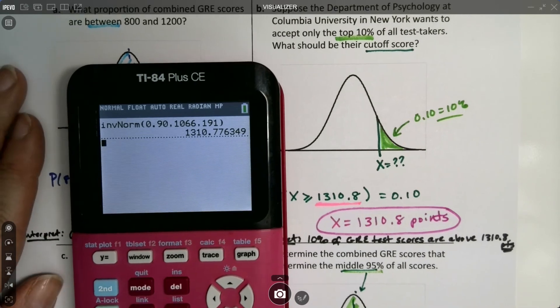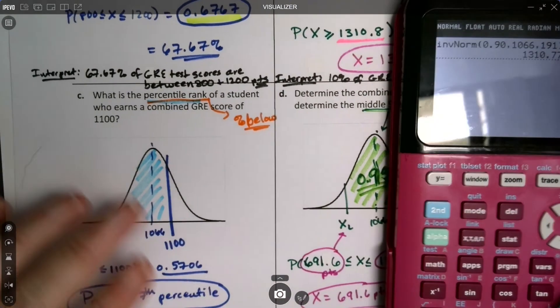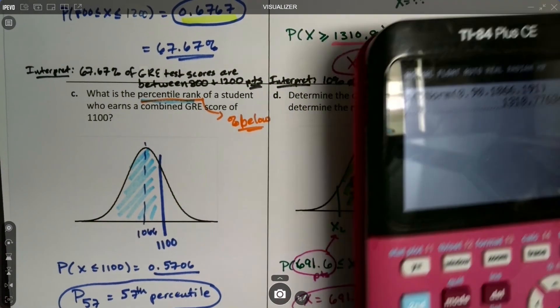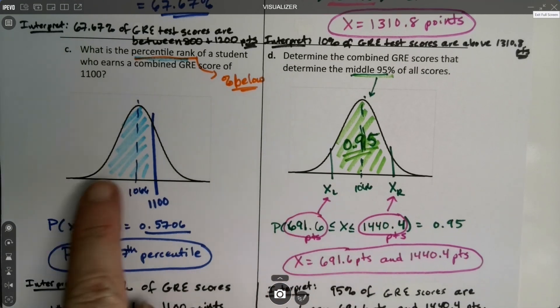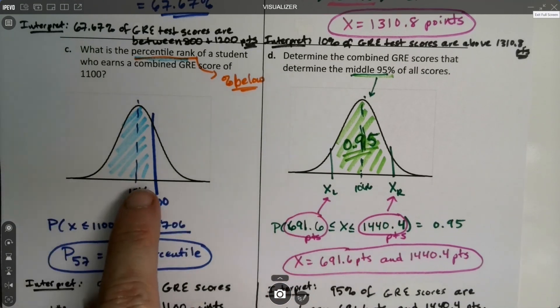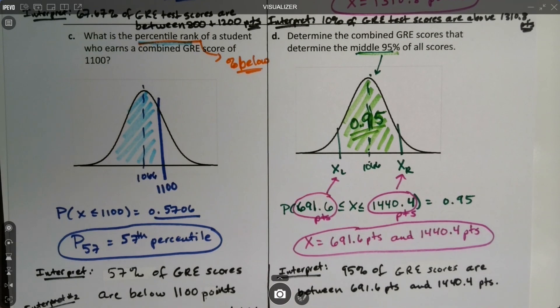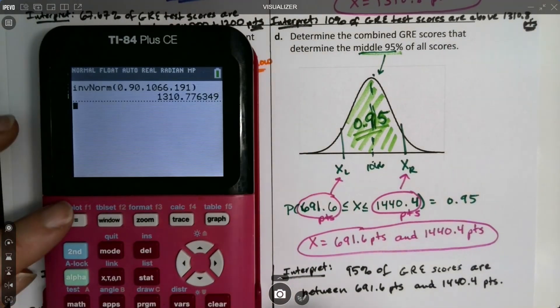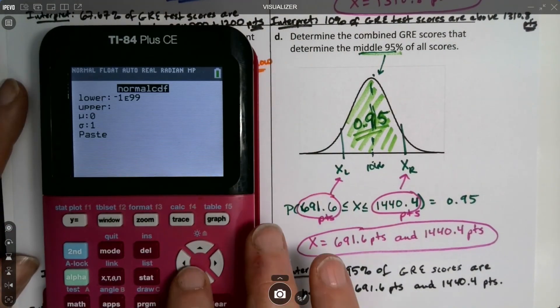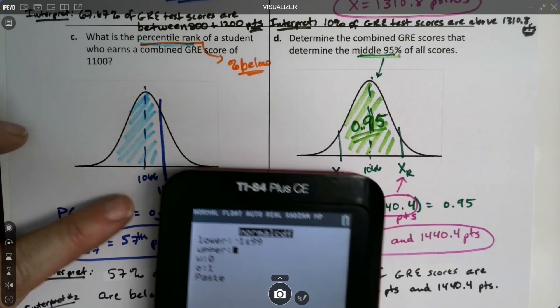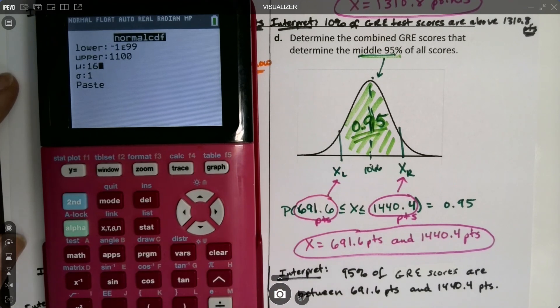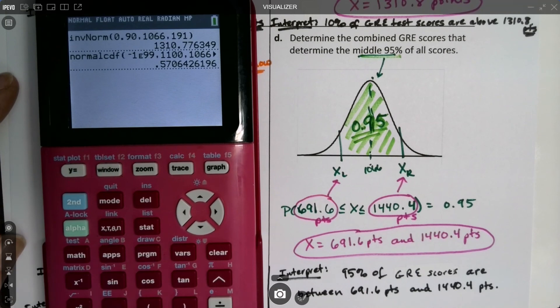Alright, then, what is the percentile rank of a student who earns a combined GRE score of 1100? That's inverse, excuse me, not inverse norm, that's normal CDF. So let me go, actually, I can do this on this calculator. So normal CDF, it doesn't matter, they're the same for both. It's negative 1E99 to 1100. So this function is no different from the old calculator to the new calculator. There you go. You paste it in, you've got it.